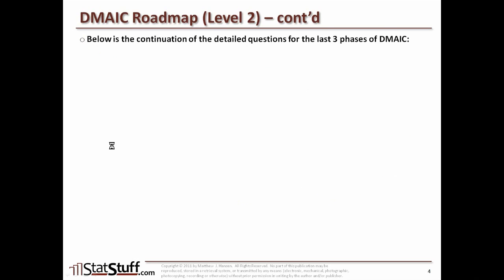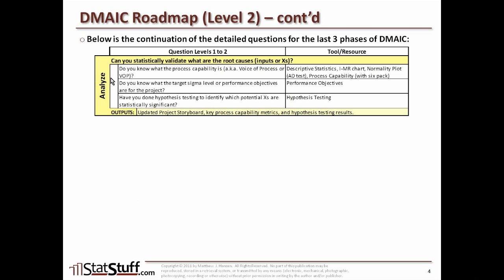Once we can answer yes for the Measure phase, we move on to the Analyze phase. The top-level question is: can you statistically validate what are the root causes — those inputs or X's? If we cannot answer yes, we go into the sub-layer questions. First: do you know what the process capability is? Then: do you know what the target sigma level or performance objectives are for the project? And finally: have you done hypothesis testing to identify which potential X's are statistically significant? Use these questions and the tools and resources to the right as a guide to answer the big Analyze phase question about statistically validating the root causes.